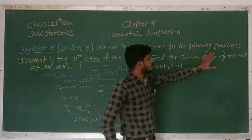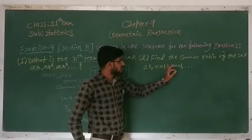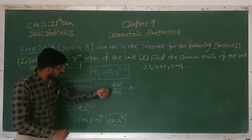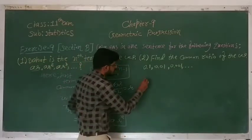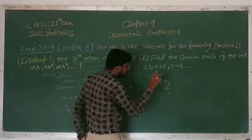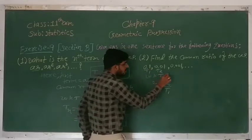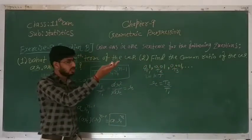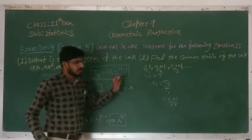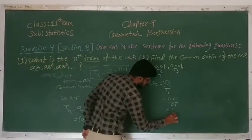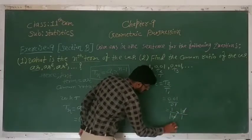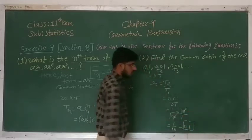Second question: find the common ratio of the GP 0.1, 0.01, 0.001, and so on. To find the common ratio, we use R = T2 upon T1. Here the first term is 0.1 and the second term is 0.01. So R = 0.01 upon 0.1, which gives 1/100 divided by 1/10, so the common ratio is 1/10.